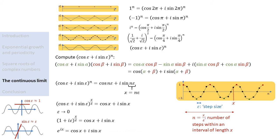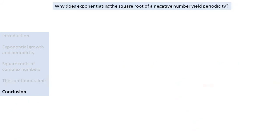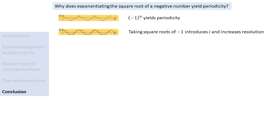The resulting formula is known as Euler's formula. So let's summarize how we can intuitively understand why exponentiating the square root of a negative number yields a periodic function. We saw that taking the exponent of minus 1 yields a periodic function. Taking square roots of minus 1 introduces the imaginary number i, and it increases the resolution with which we sampled the oscillation.